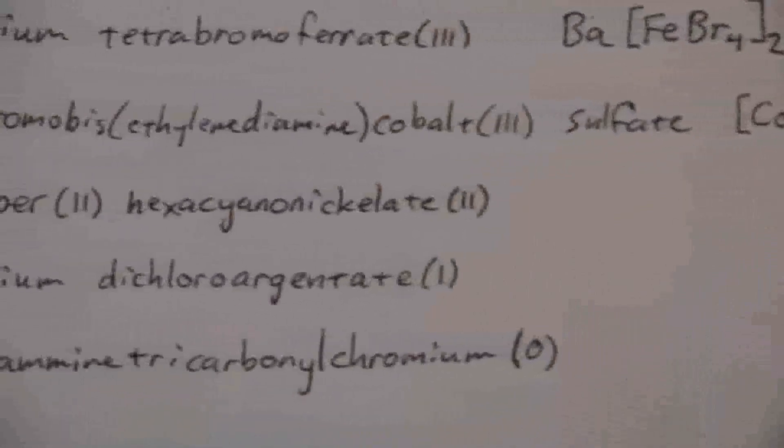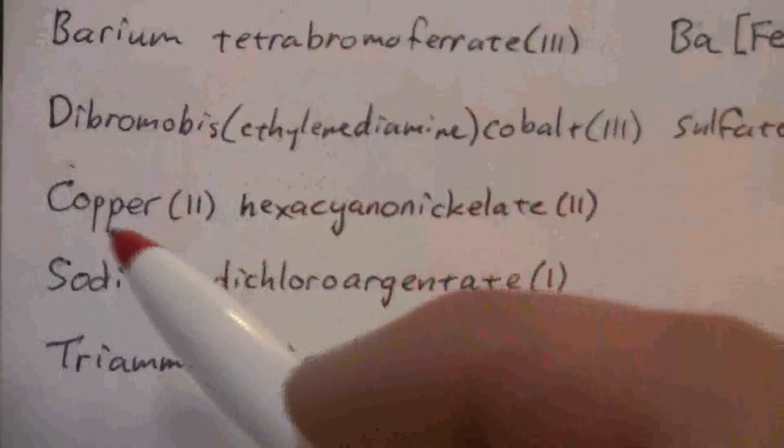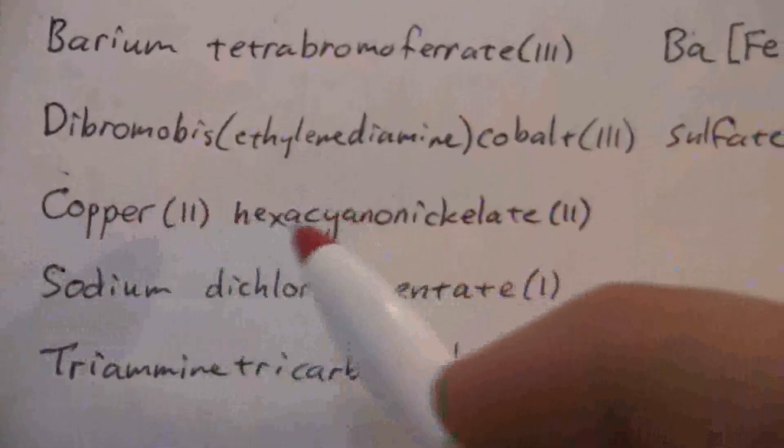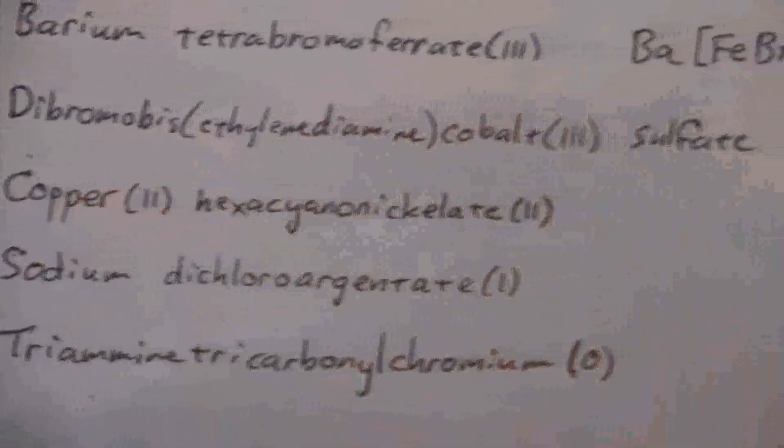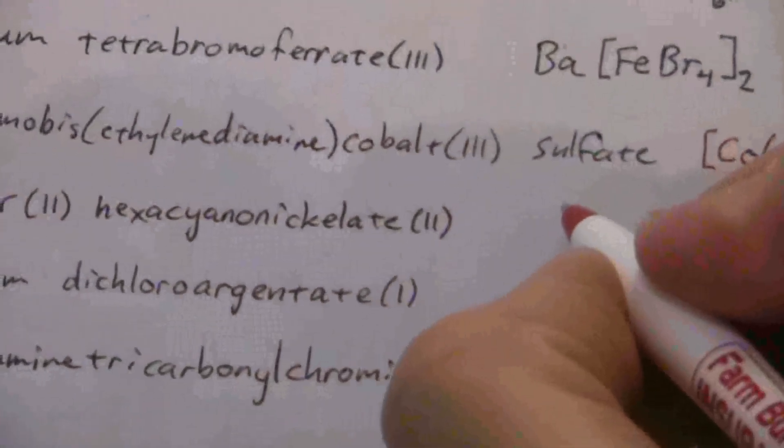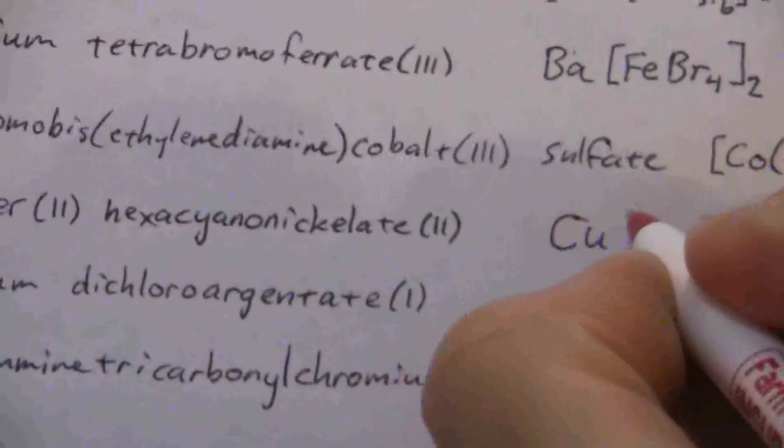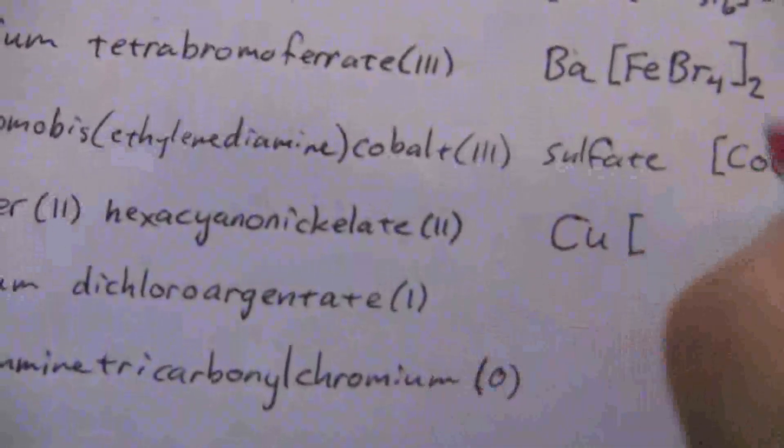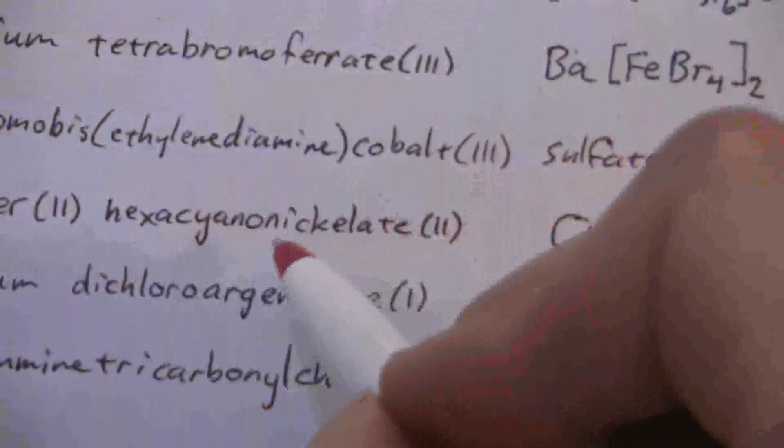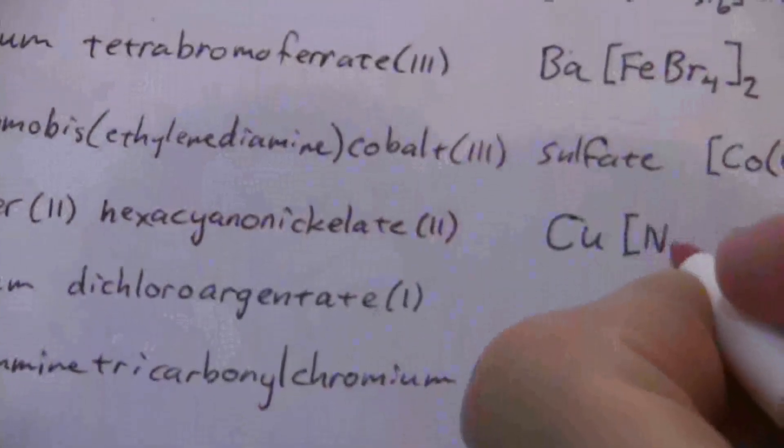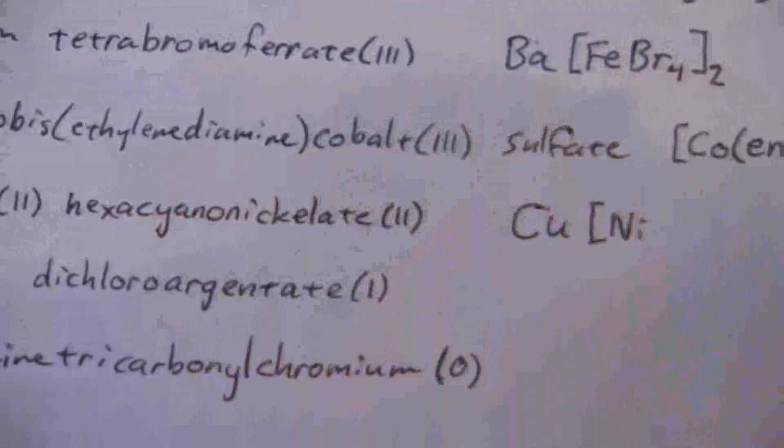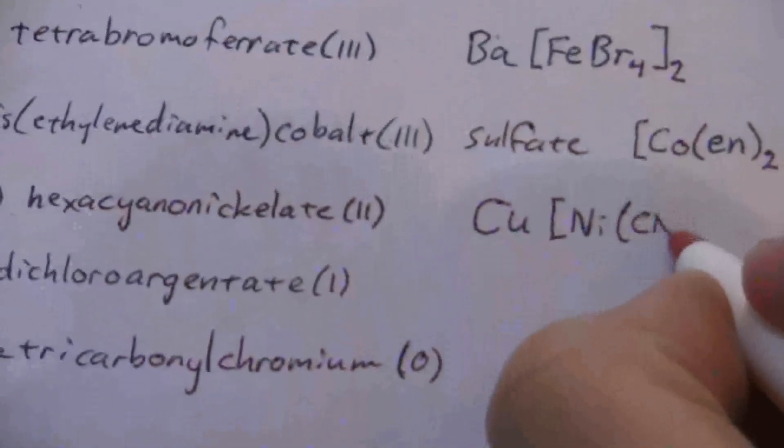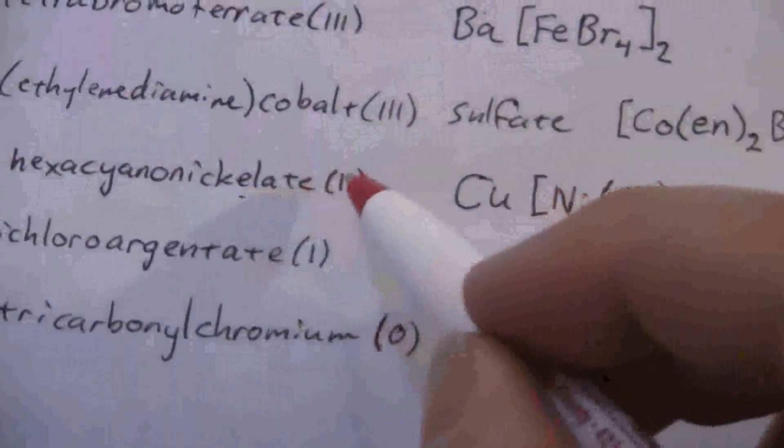And here we have copper(II) hexacyanoniccolate(II). So copper(II), that is my cation, and then I have hexacyanoniccolate(II), so this is a nickel-containing ion. Hexacyano - hexacyano, so six cyanide, and it's niccolate(II).